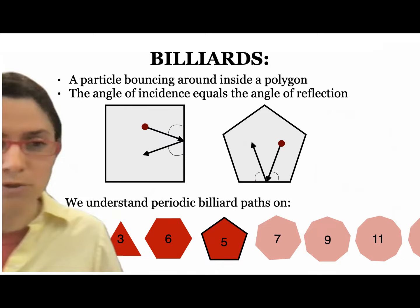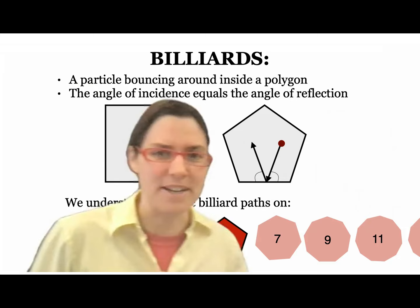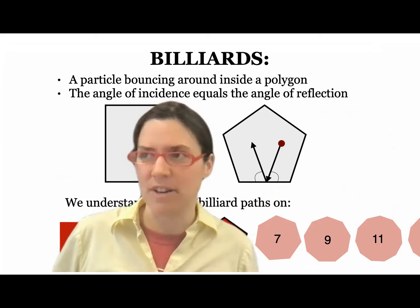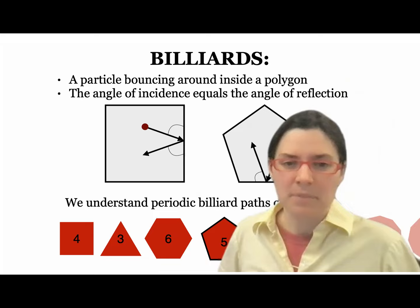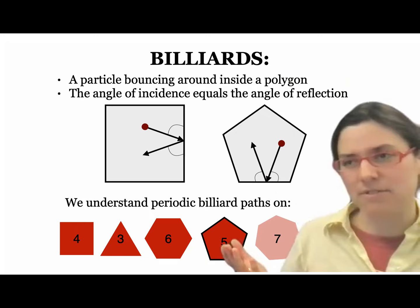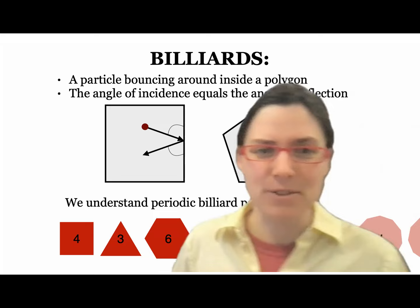Before my collaborator and I started working on this, we really understood the shapes that tile the plane by reflection across their edges: the square, the equilateral triangle, and the regular hexagon. We started working on the regular pentagon because it was the next most interesting example, and then we were able to extend it to all odd-numbered regular polygons and then even-numbered polygons.